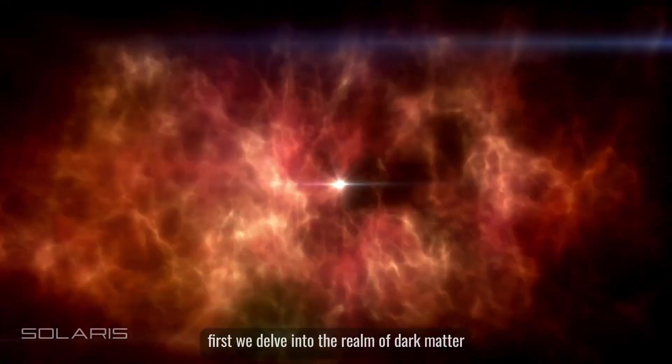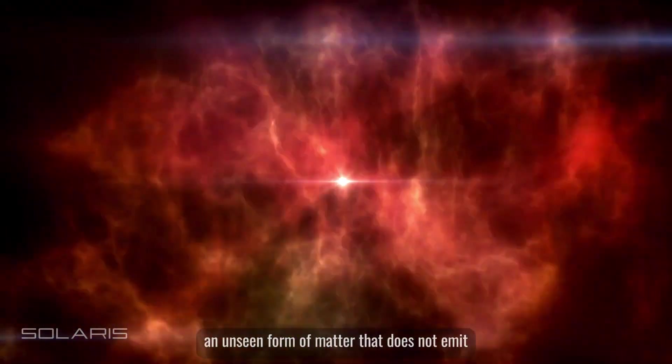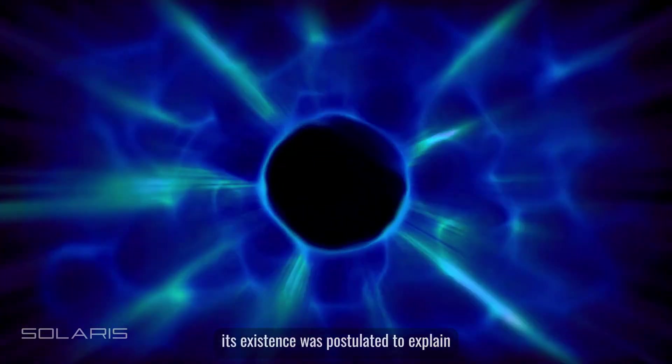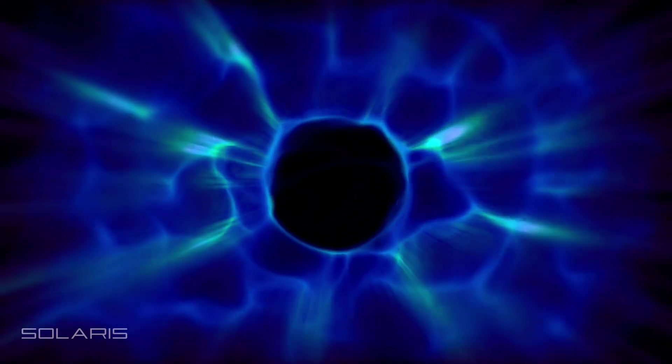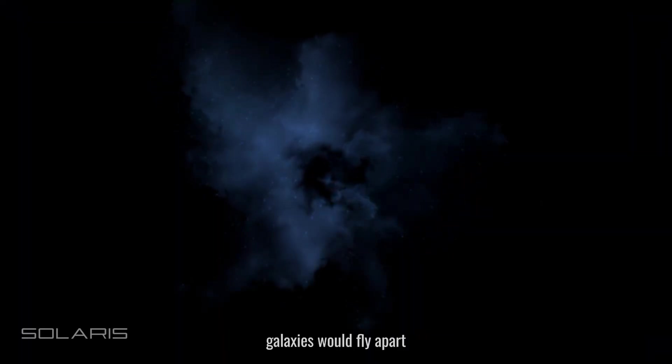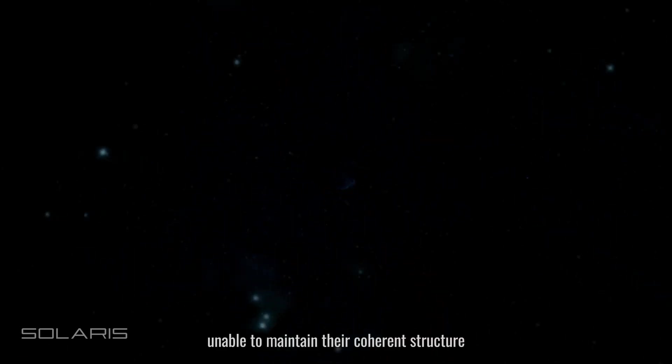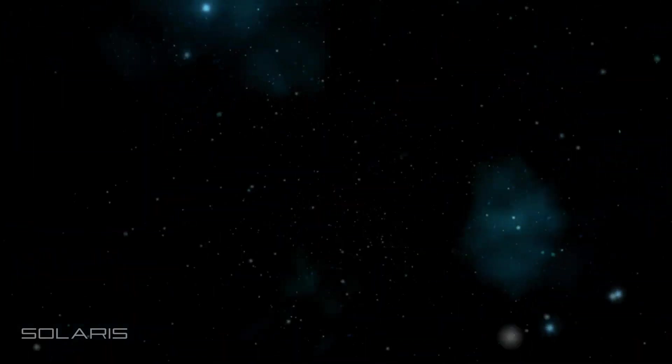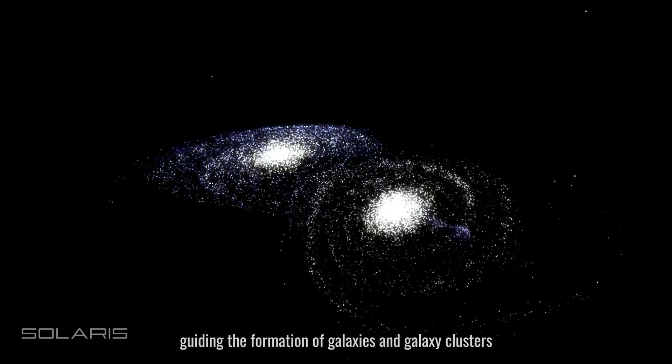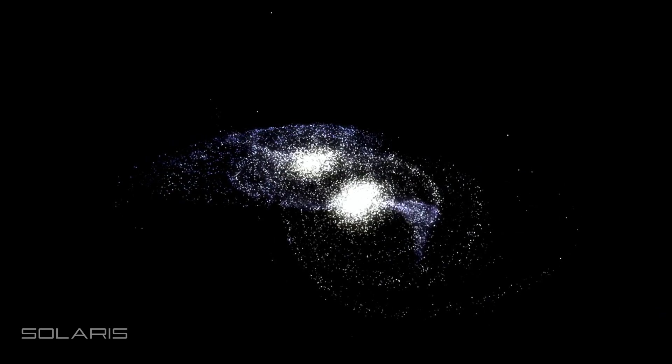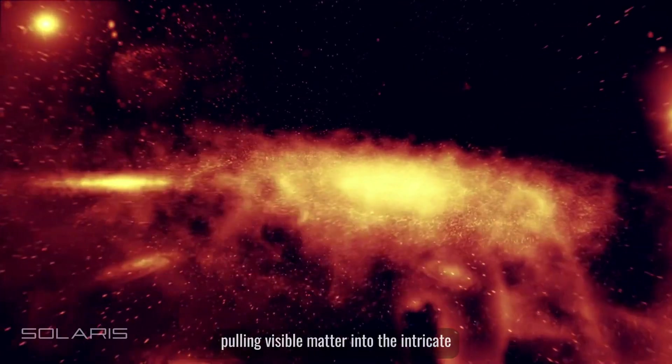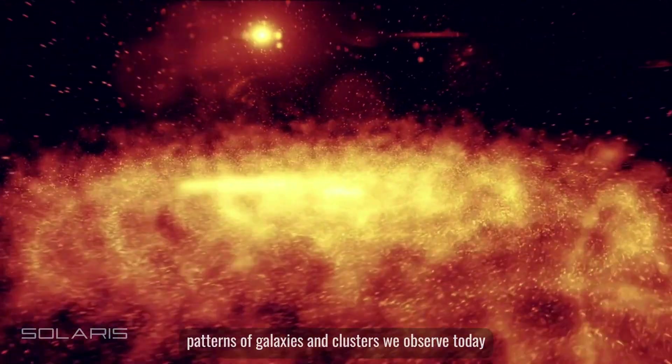First, we delve into the realm of dark matter, an unseen form of matter that does not emit, absorb, or reflect light. Its existence was postulated to explain the gravitational anomalies observed in the motion of galaxies. Without dark matter's gravitational glue, galaxies would fly apart, unable to maintain their coherent structure. Dark matter acts as the scaffold of the universe, guiding the formation of galaxies and galaxy clusters along the cosmic web. Its invisible presence shapes the large-scale structure of the universe, pulling visible matter into the intricate patterns we observe today.